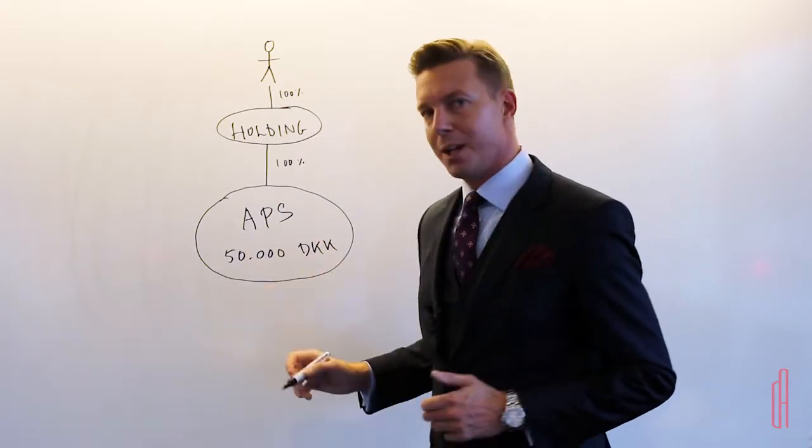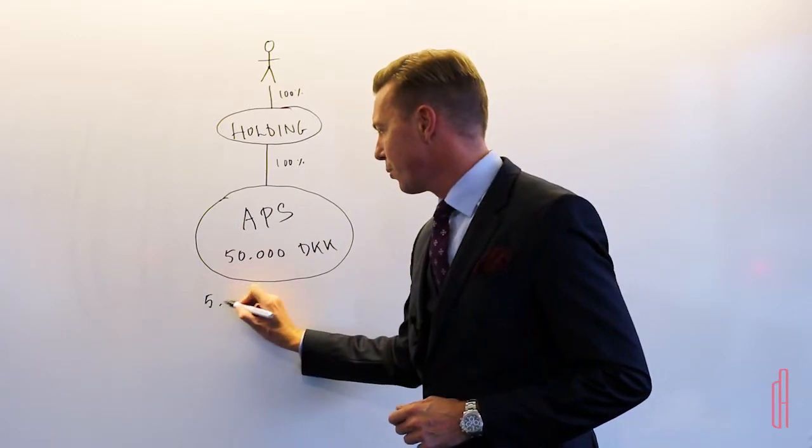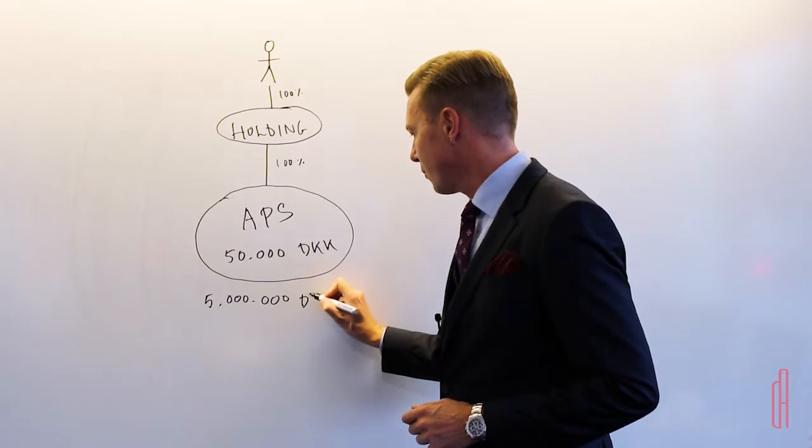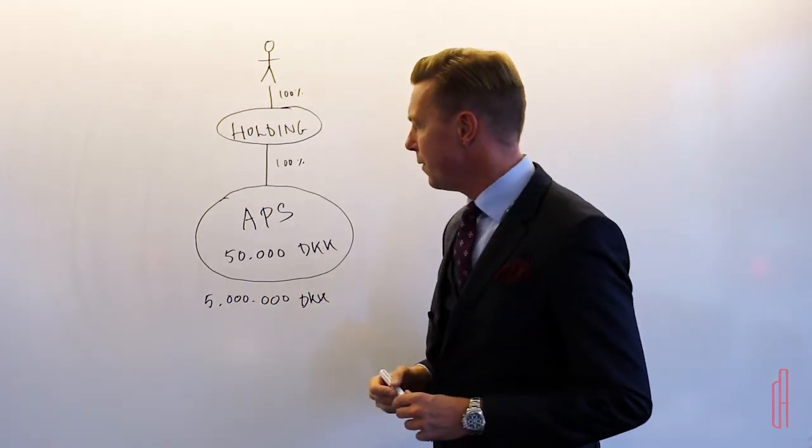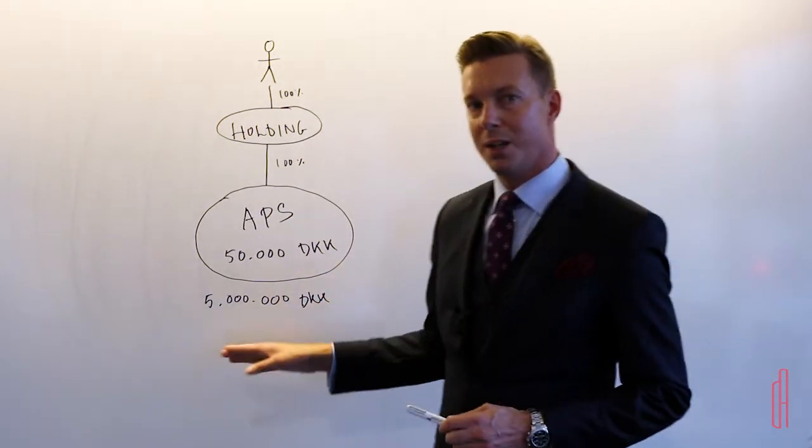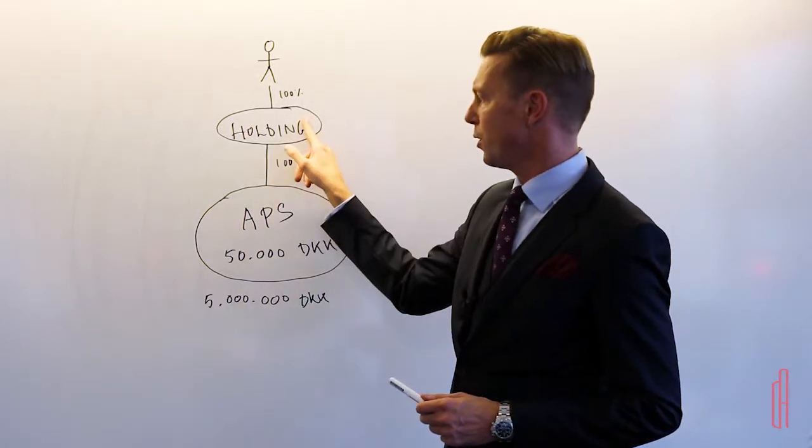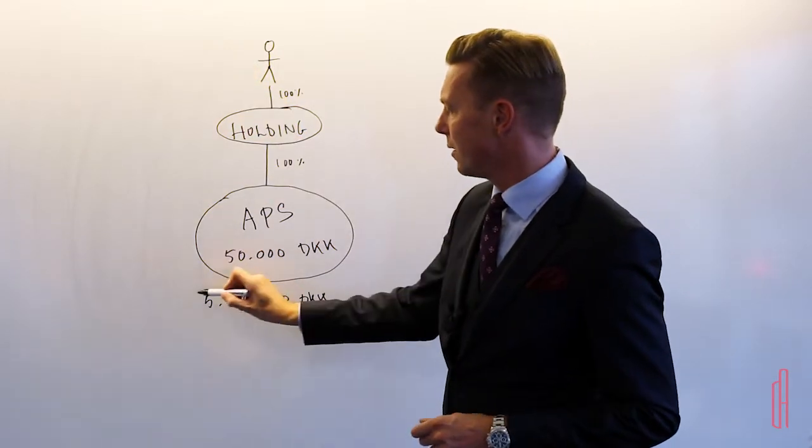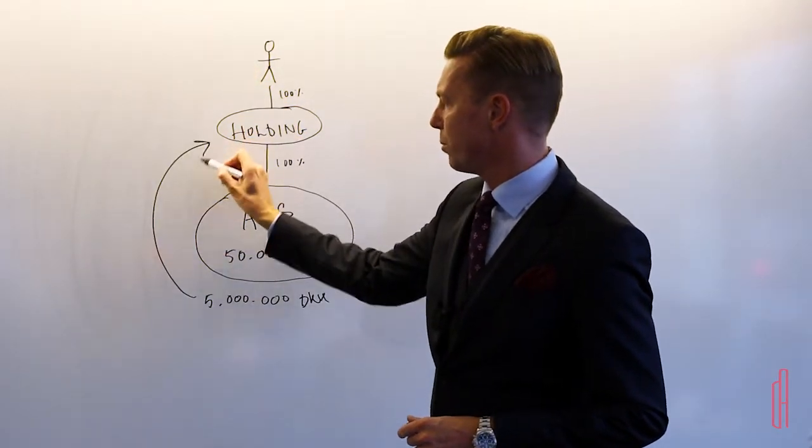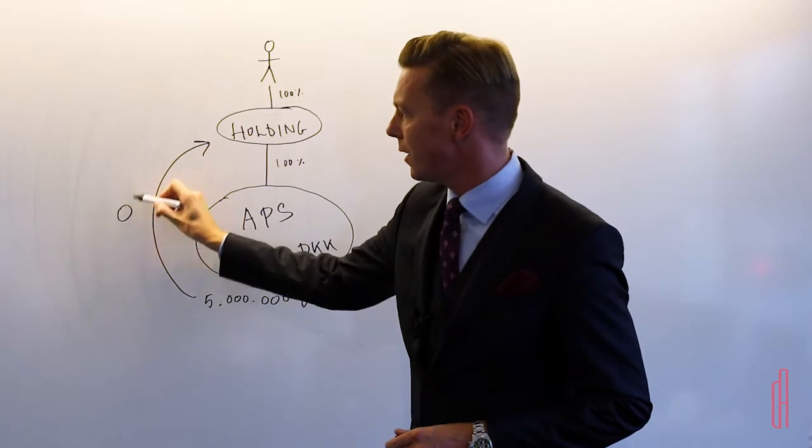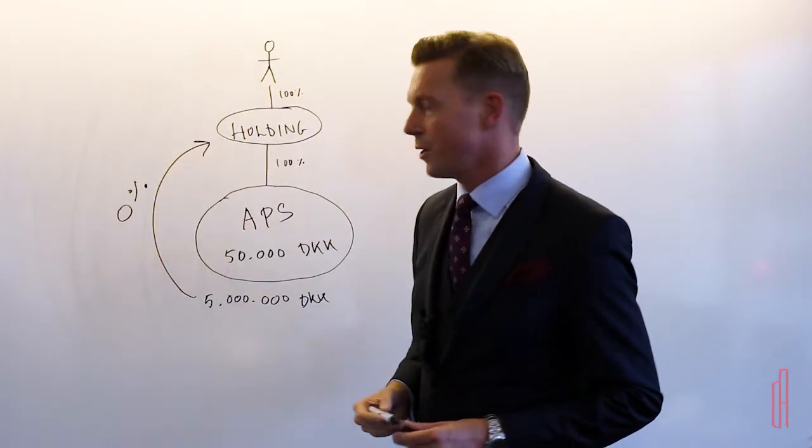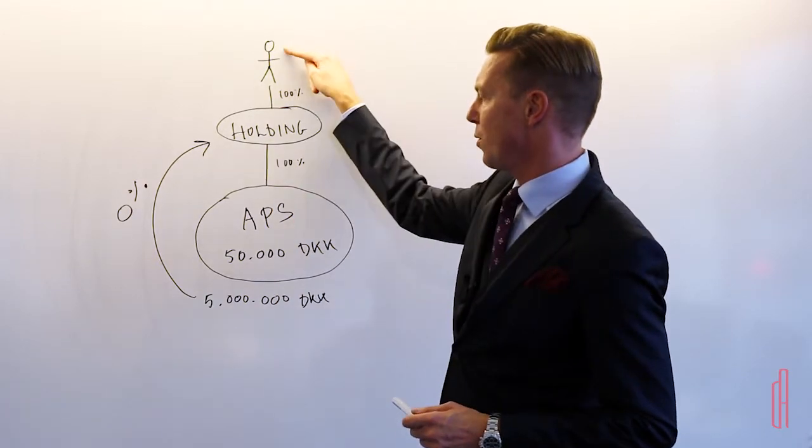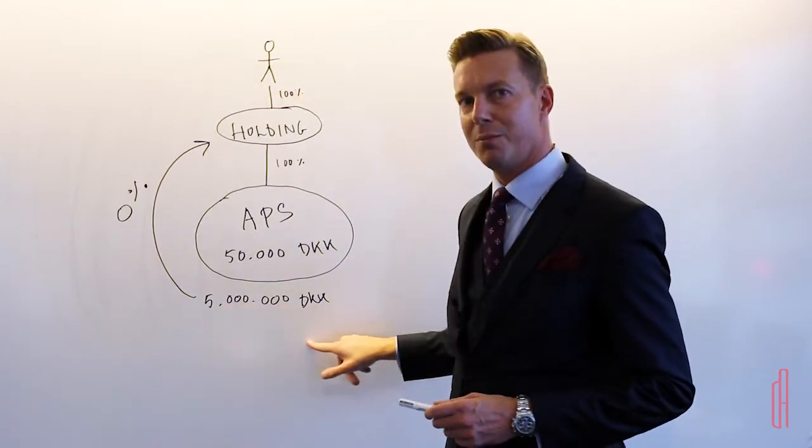And if we came into this situation like before, where we had five million kroner here on the bank account, then this structure here enables us to pay out a dividend to the holding company. So instead of paying out a dividend here to the shareholder, we actually pay out a dividend to the holding company. And the tax on a dividend here is actually 0%, so that makes it much more convenient for the shareholder to secure these five million here.